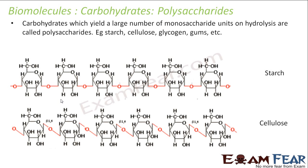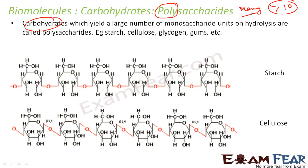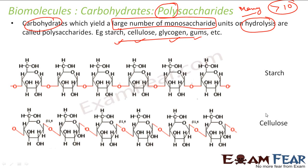The next type is polysaccharides. Poly means many — that is, more than 10 units. Carbohydrates which on hydrolysis give a large number of monosaccharides are called polysaccharides. Examples include starch, cellulose, glycogen, and gums. We will discuss these in detail. Starch is made up of many monosaccharide units, and cellulose is similarly made by n number of monosaccharides combined with bonds. When you do hydrolysis, all these bonds will break and you will get different units of monosaccharides.